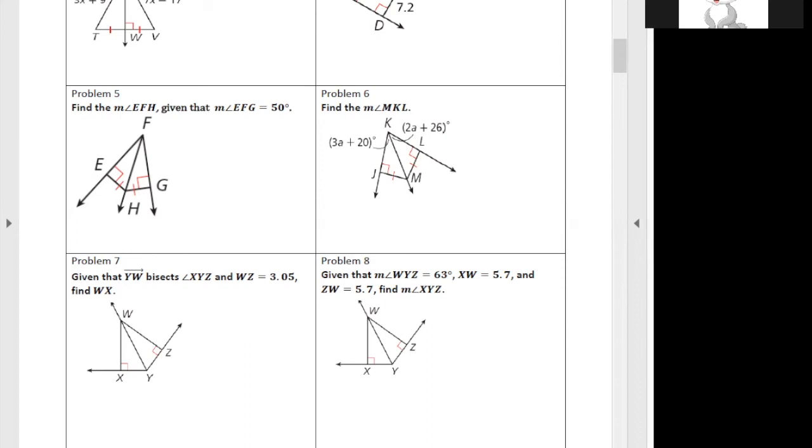A equals 6, but you need to use the value A put into the expression, and then you will get the angle of the M, right? Because it's 2A, 2 times 12 plus 26, 12 plus 26, 38. Any questions for this one?